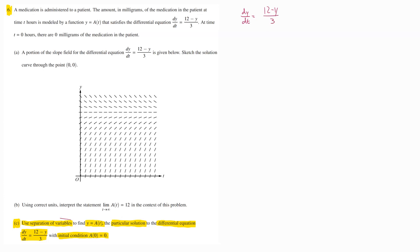They're saying use separation of variables, which means we need to get the y pieces on one side of this equation and the t pieces on the other side. So the first thing I'll do is get my t over on this side. So we end up with dy = (12 - y)/3 dt.